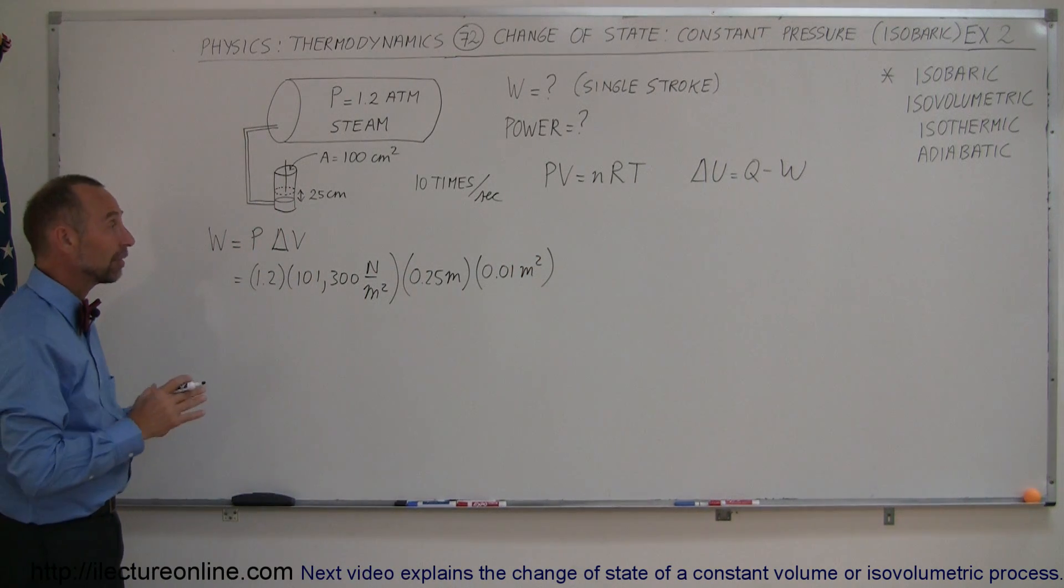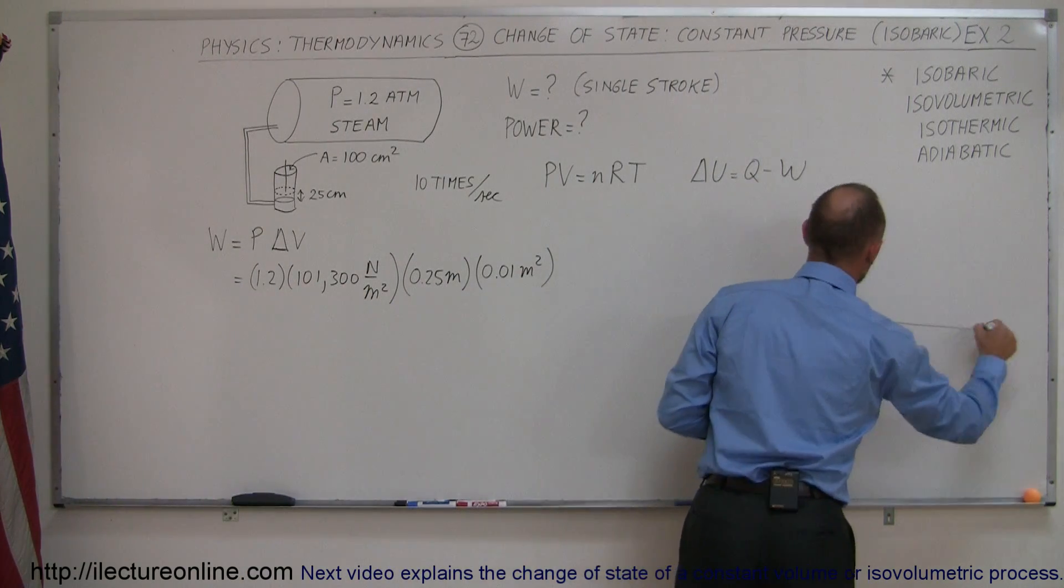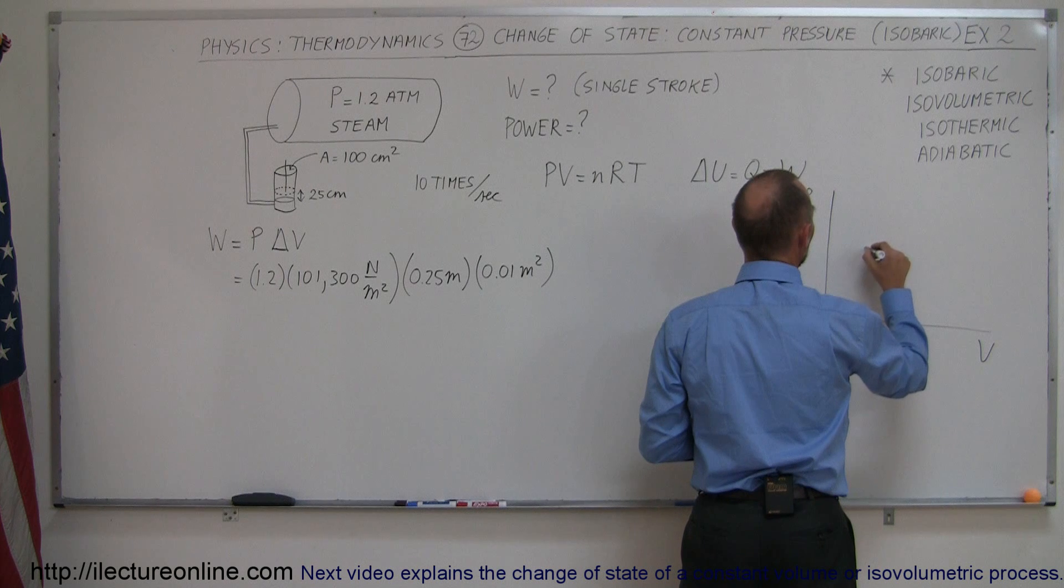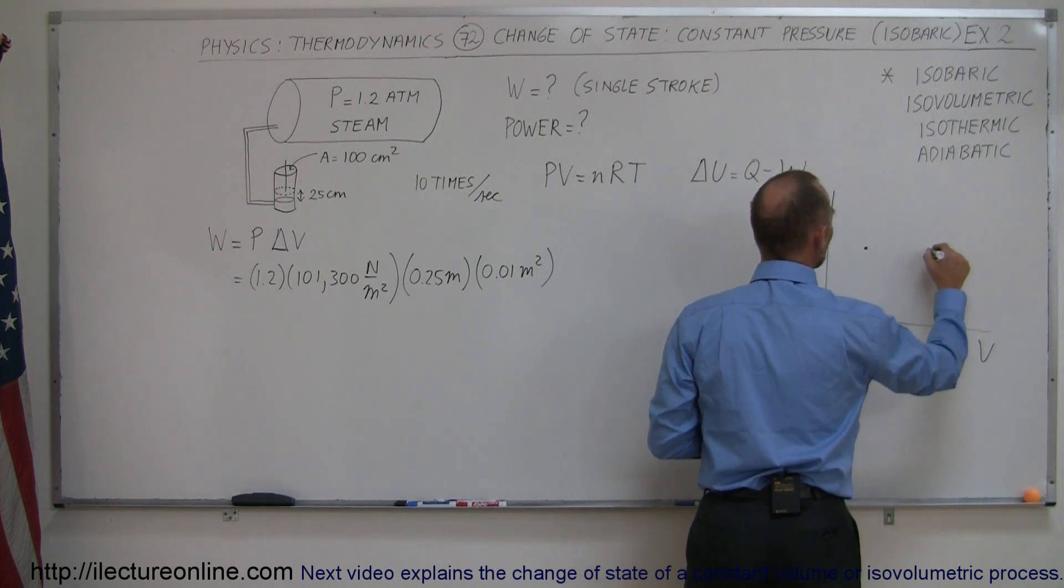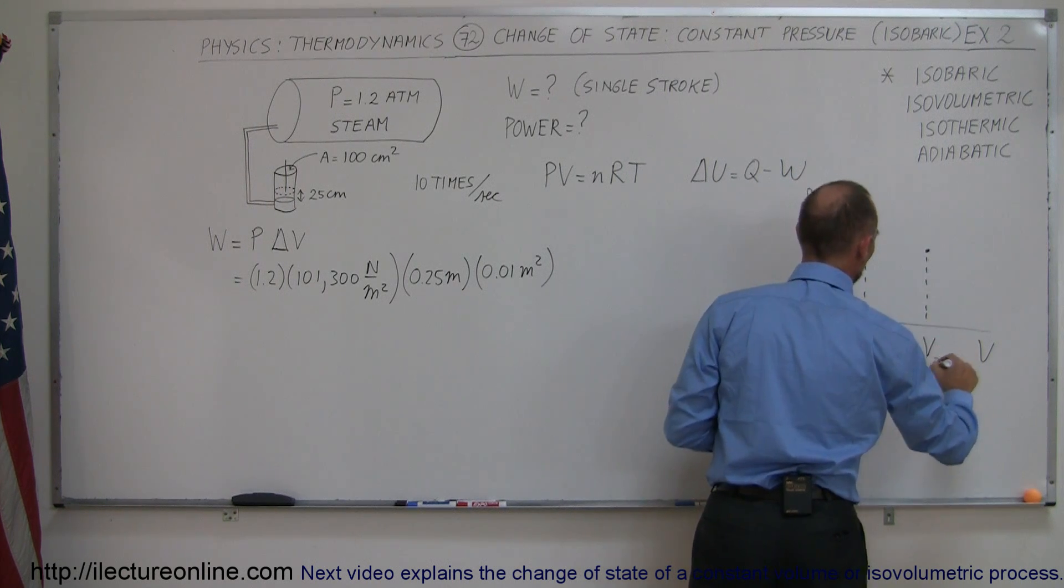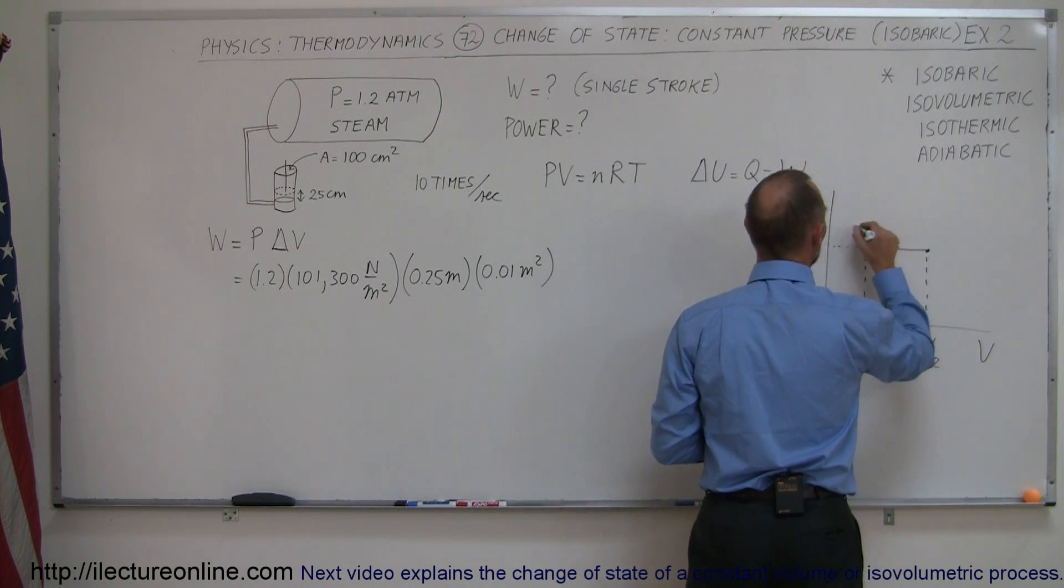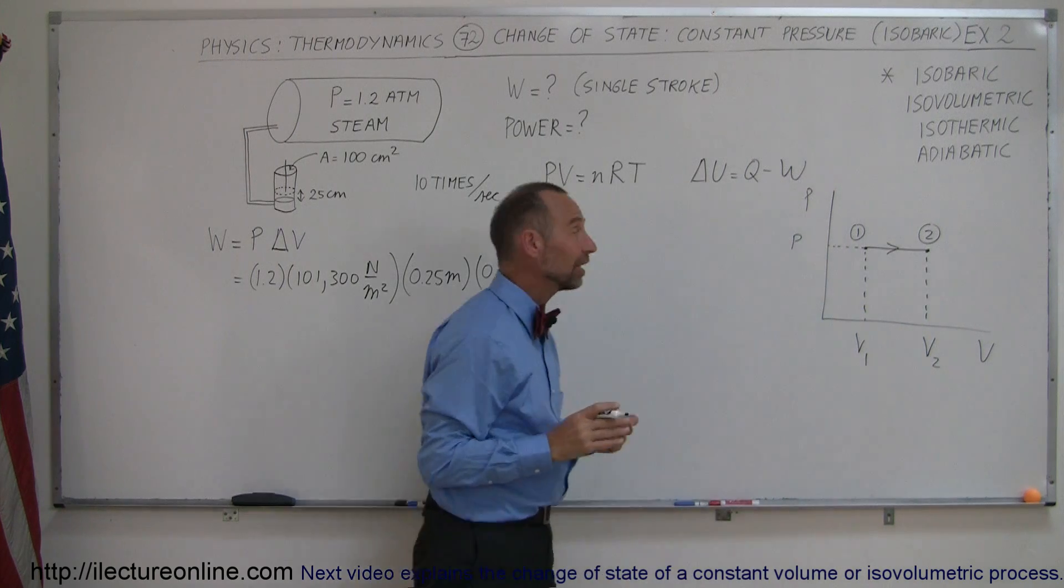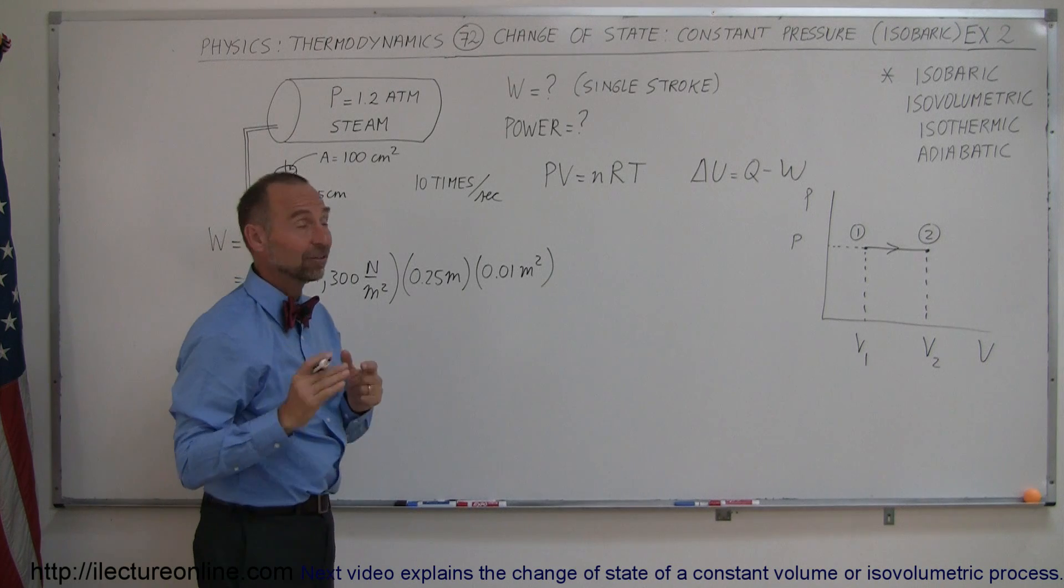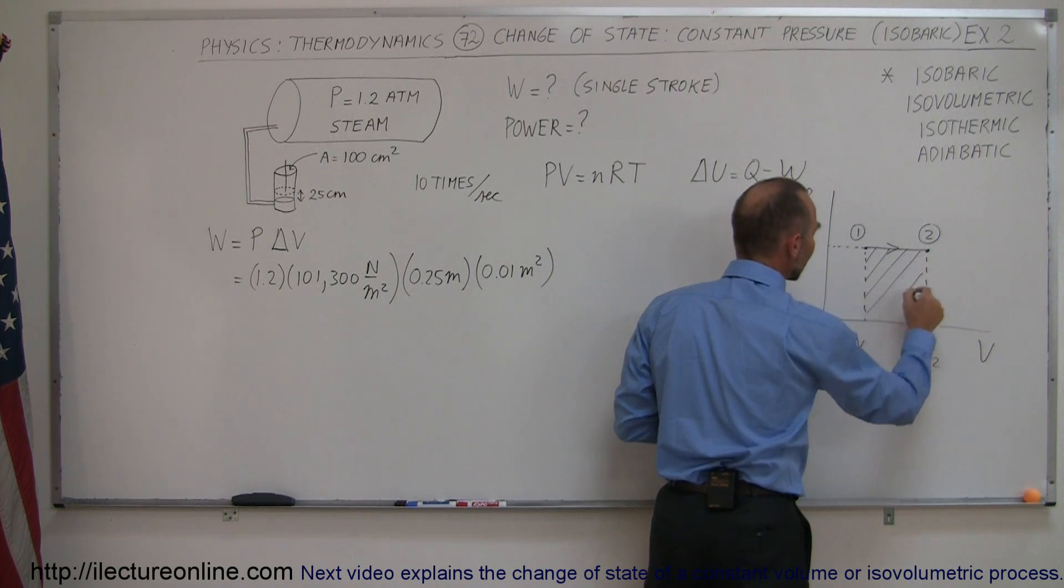All right. Now, what also is sometimes very useful to do is put this on a PV diagram. So, over here, we have pressure on the vertical axis, volume on the horizontal axis. So, we start from a particular volume here, and we change to a final volume there. So, this would be volume 1. This would be volume 2. Over here, this is the pressure, which doesn't change. And we start over here, and we end up over there. So, here you can see that the volume is increasing because the piston is being pushed up. Volume increases. Gas is doing work.